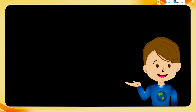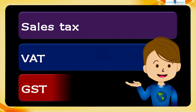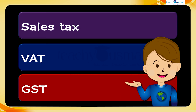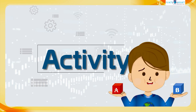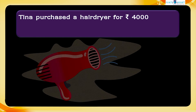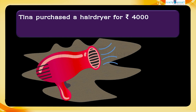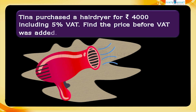Today we discussed the calculation of sales tax, VAT, and GST. Before winding up, let's check how much you understood by doing an activity. Tina purchased a hairdryer for 4000 rupees including 5% VAT. Find the price before VAT was added.